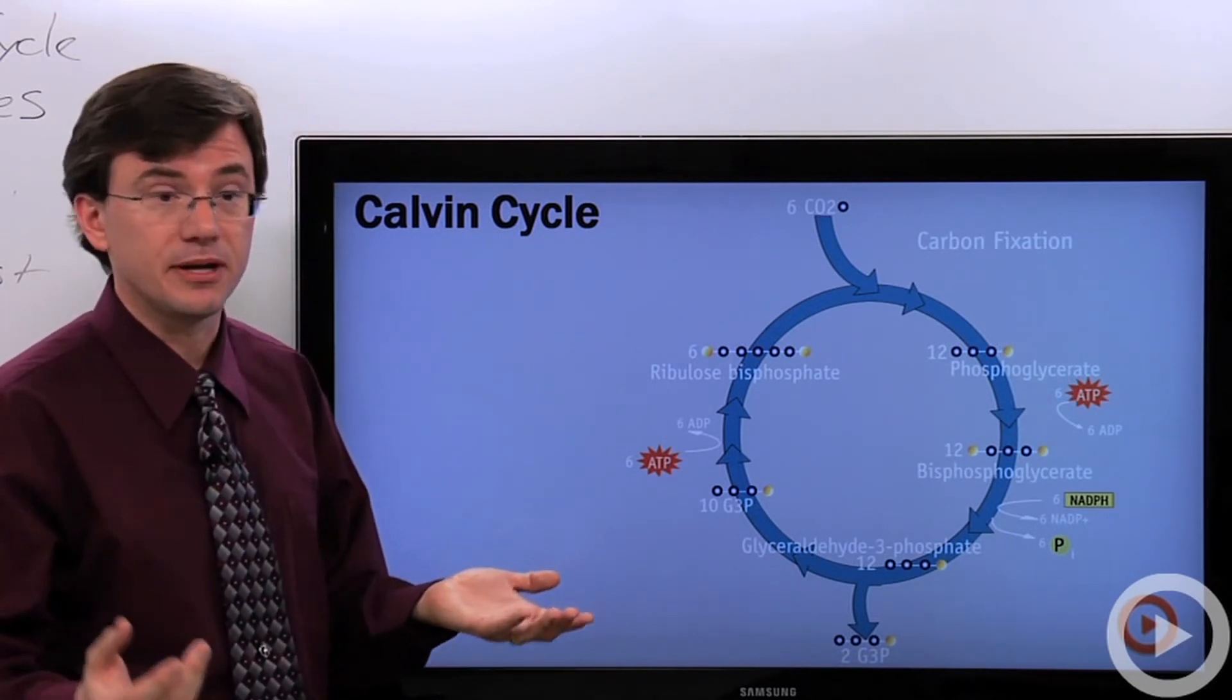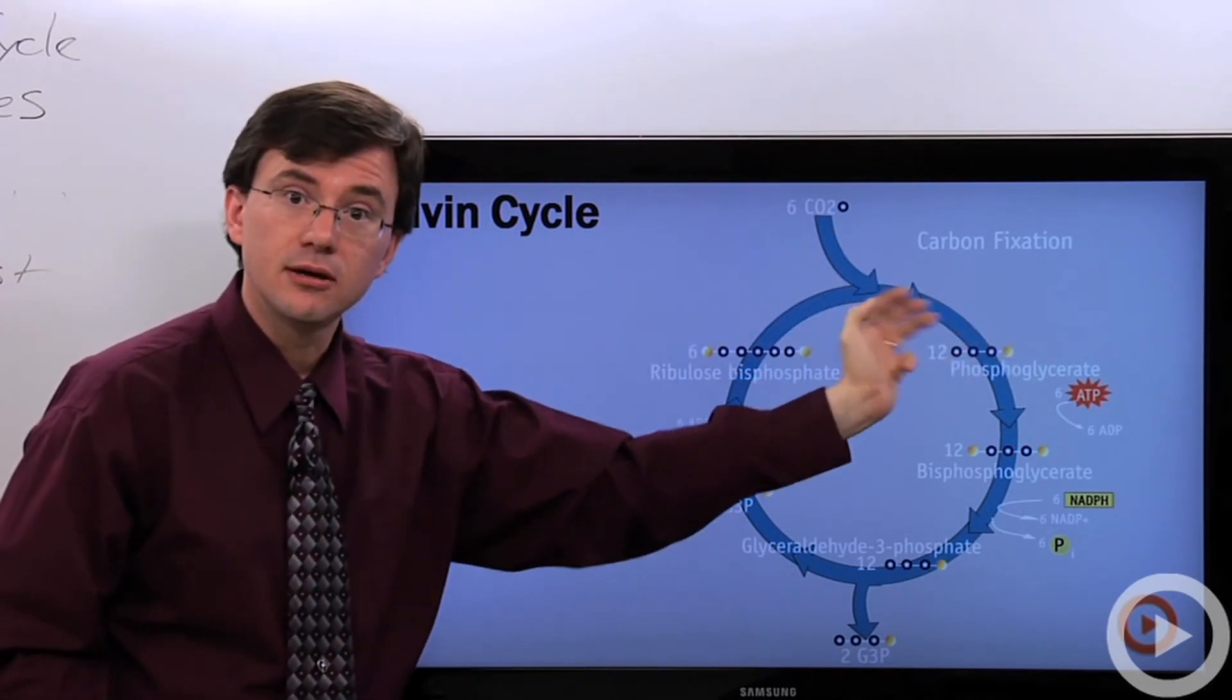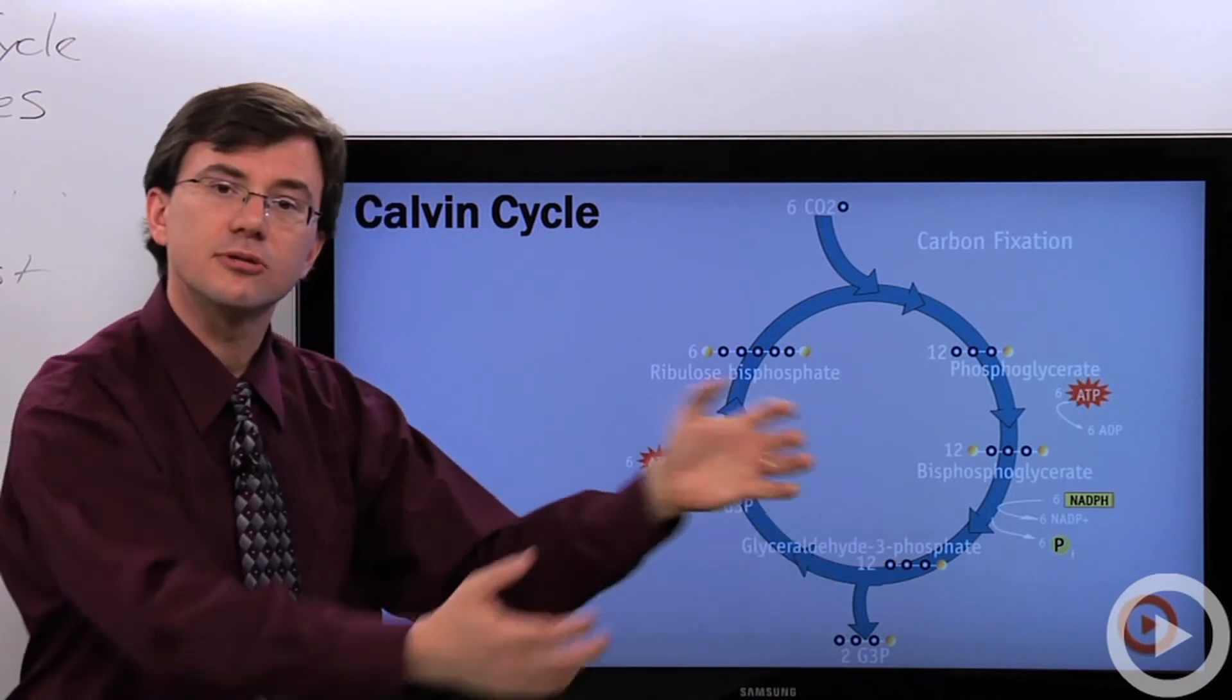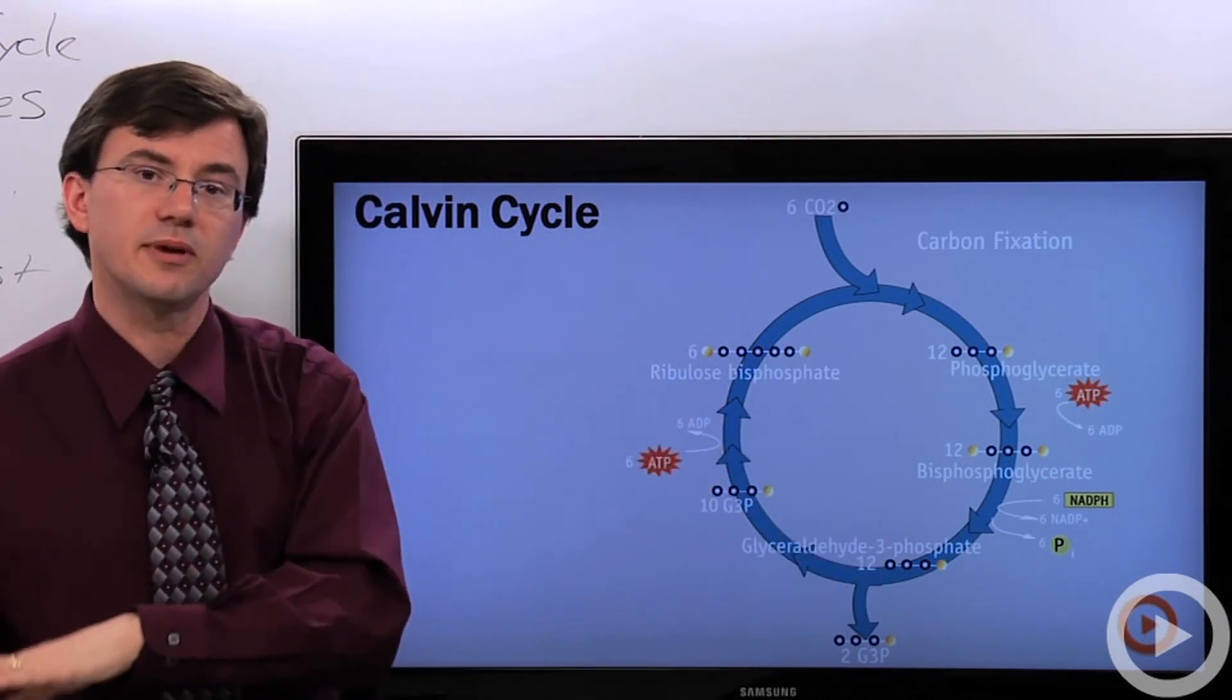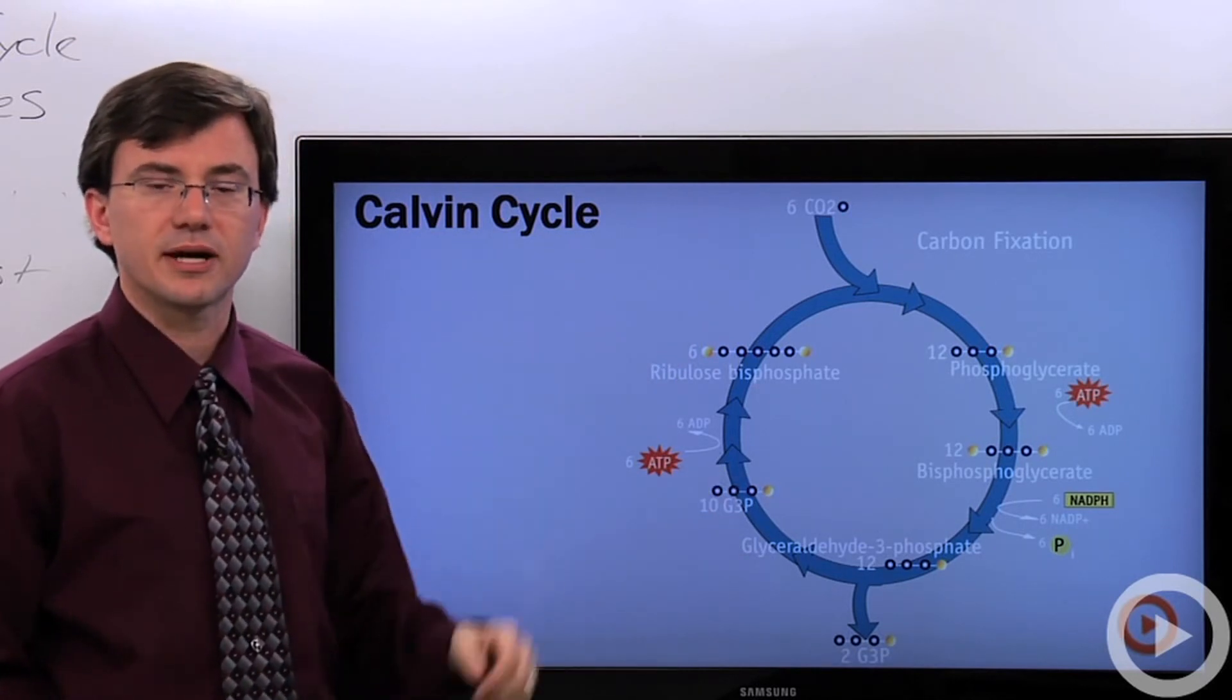This is the Calvin cycle of light independent reactions. It takes carbon dioxide, adds it to RuBP, turns it into a series of different chemicals, and ultimately allows you to pull out a few of those in order to make the glucose. And then, you spend a little bit more energy to recycle back to the beginning.